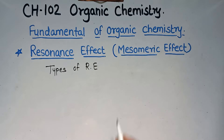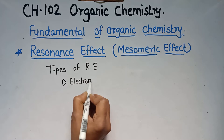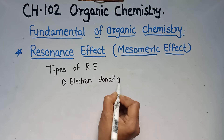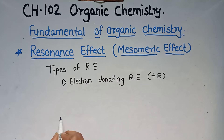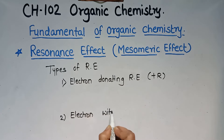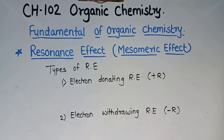There are two types of resonance effect. The first is the electron donating resonance effect, termed the +R effect. The second is the electron withdrawing resonance effect, denoted as the −R effect. Similar to the inductive effect, these two types apply here as well.